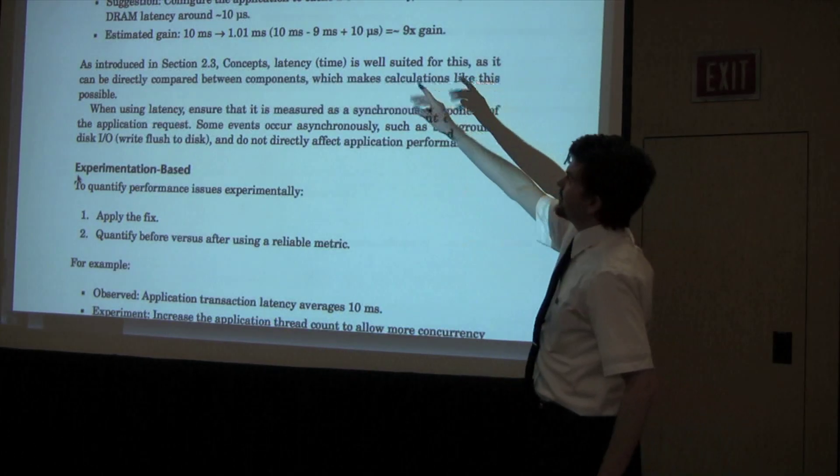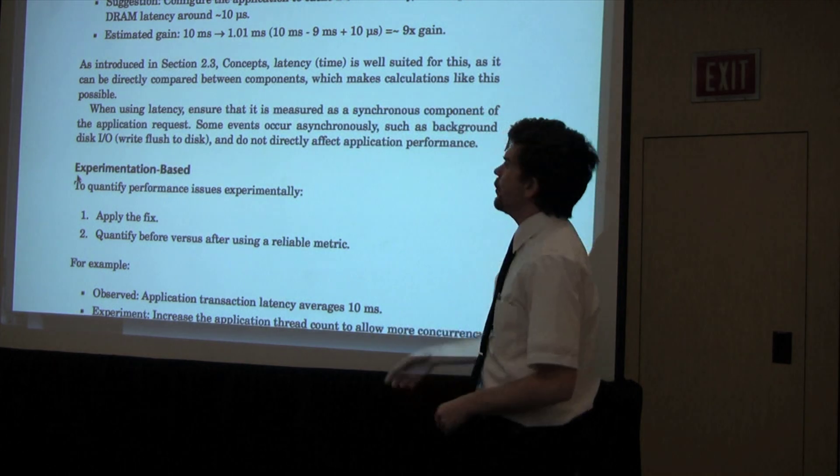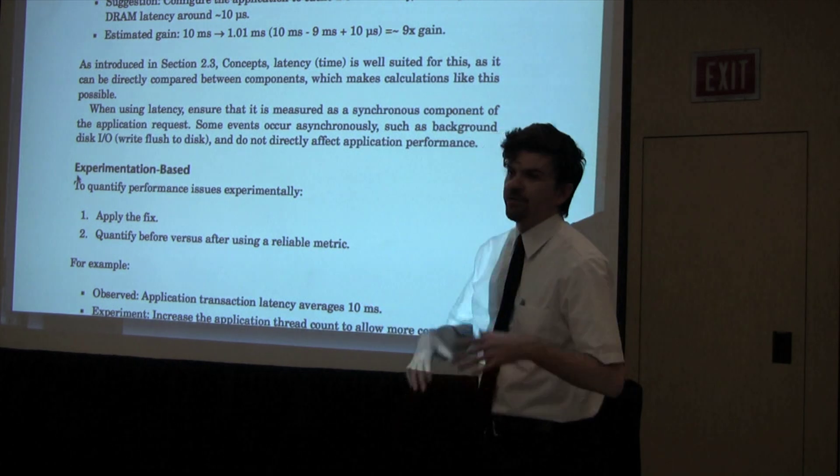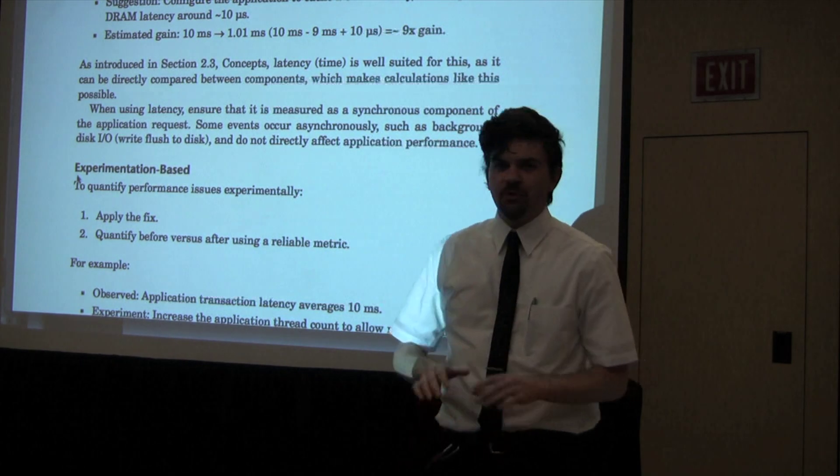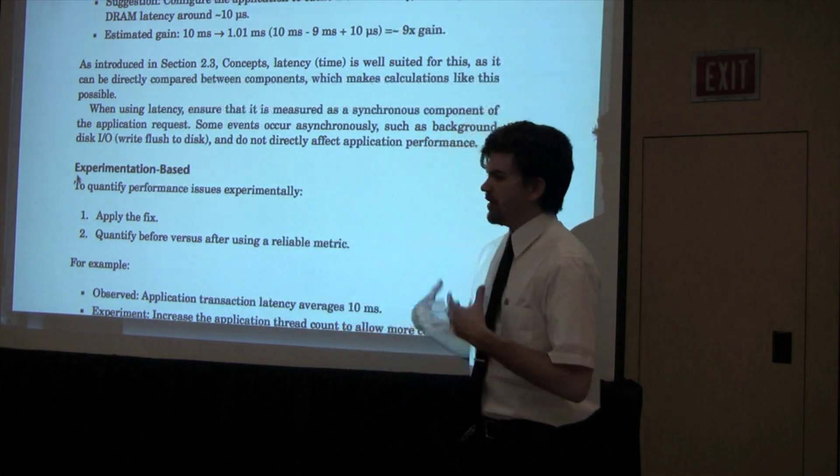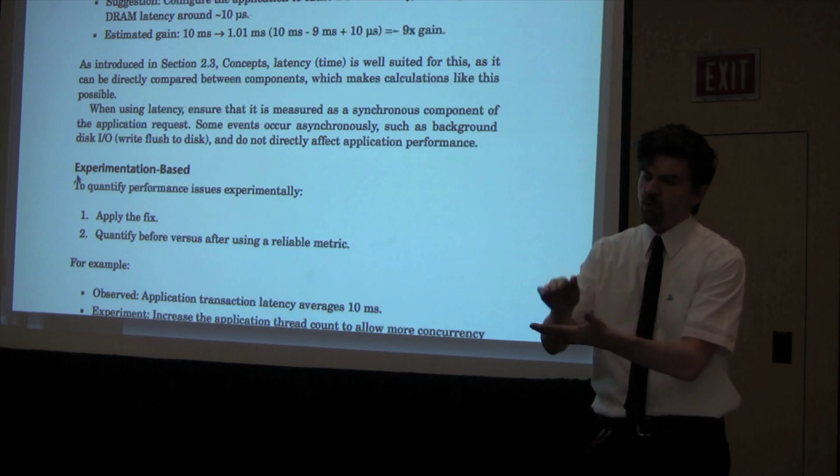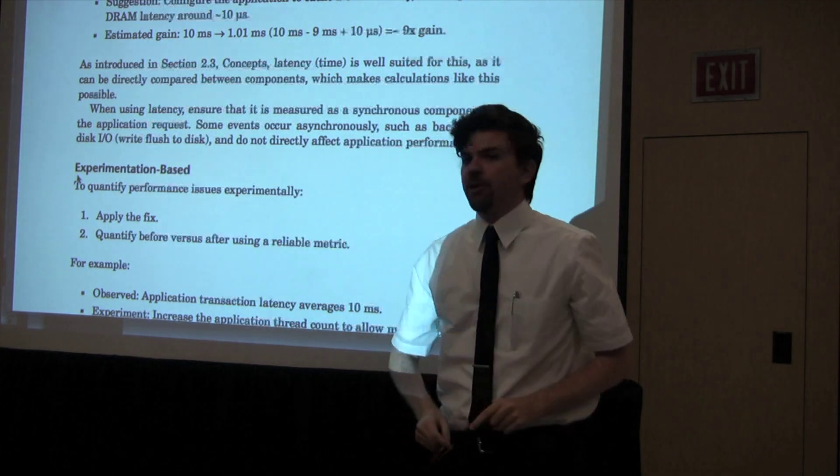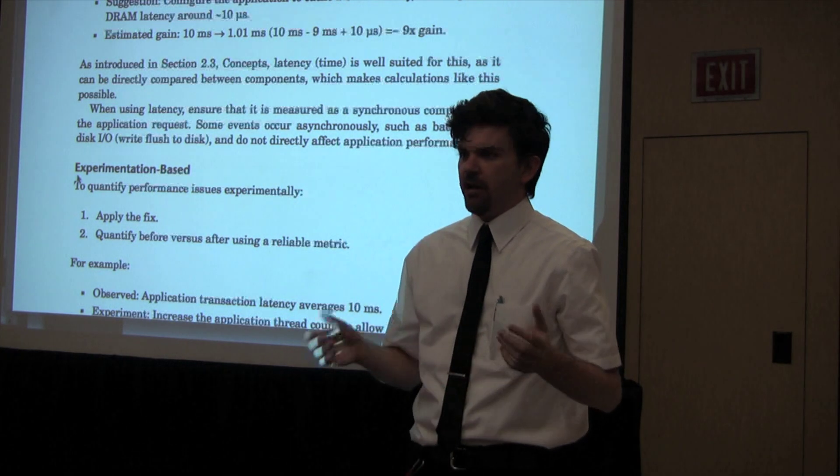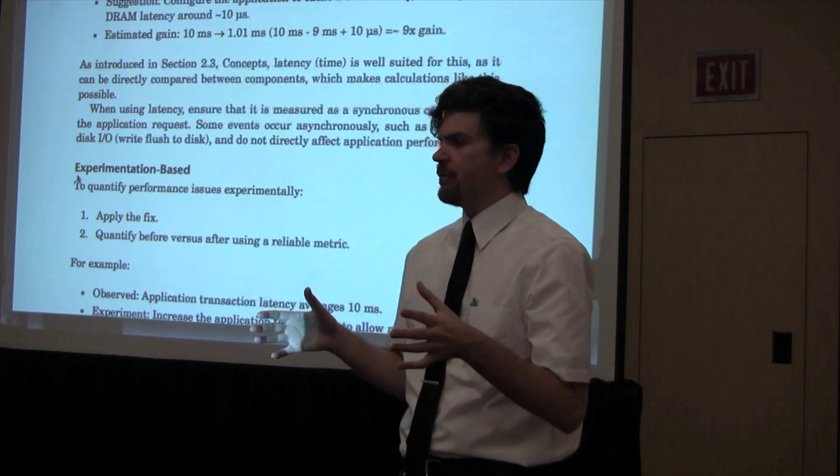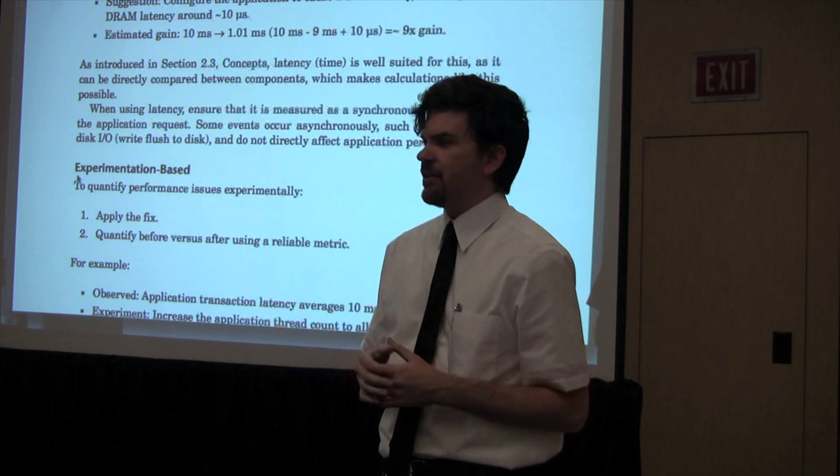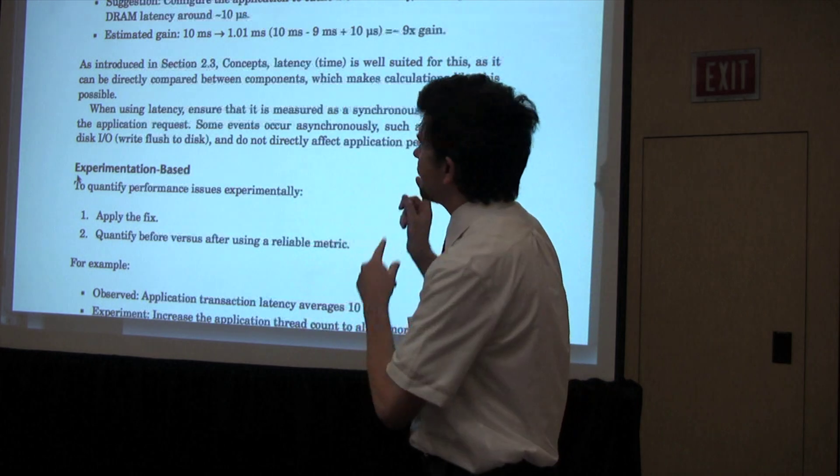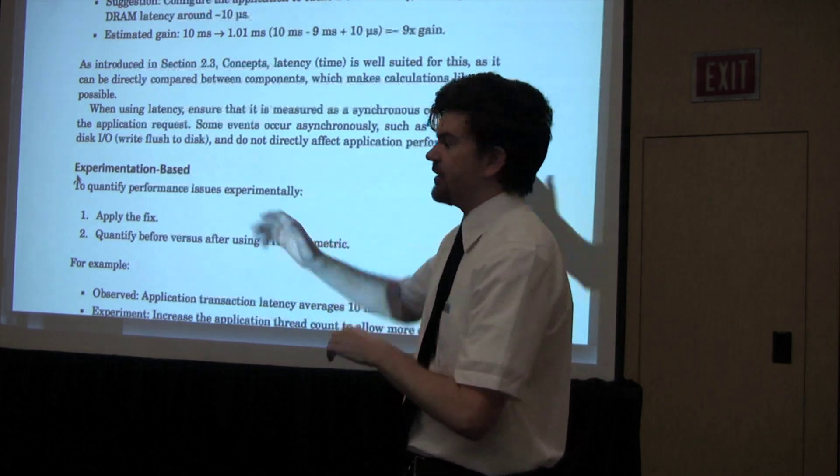For example, an application request takes 10 milliseconds. Of that, 9 milliseconds is synchronous disk I/O. If I configure to use a cache and eliminate it, I can basically make things go 9x gain or 10 times faster. Very simple math that we should all be able to do. This is actually new to some people, but it shows that when I'm working on an issue and I've quantified it, this is how I can explain to management the return of investment. This is a little speed-up law.